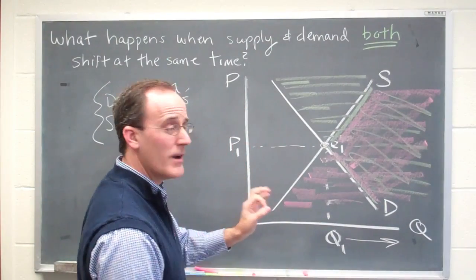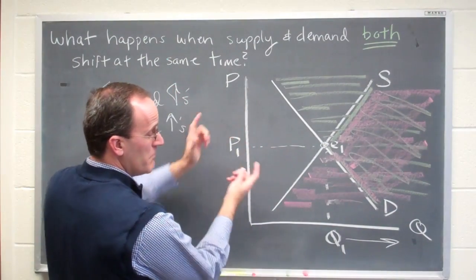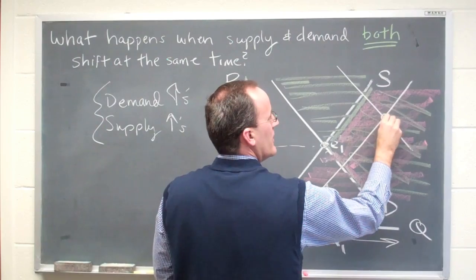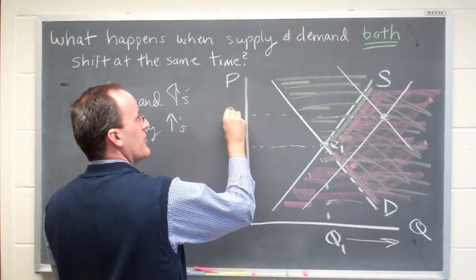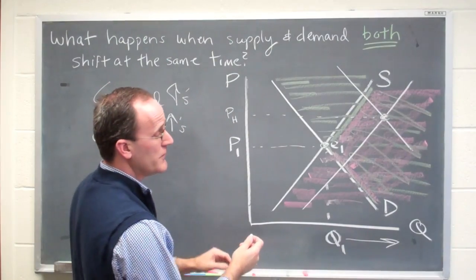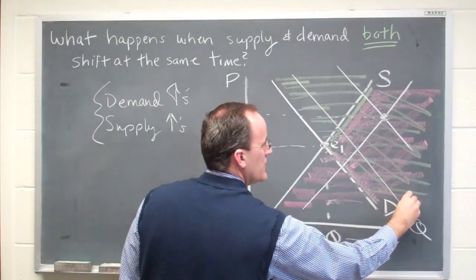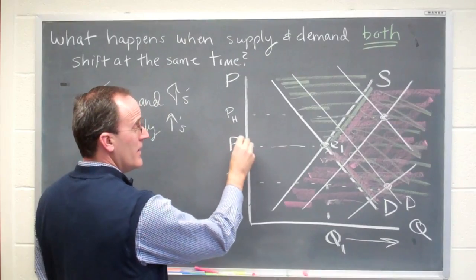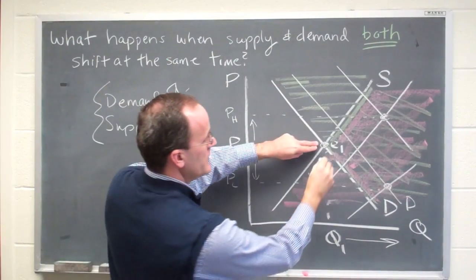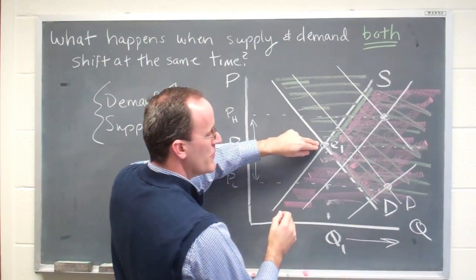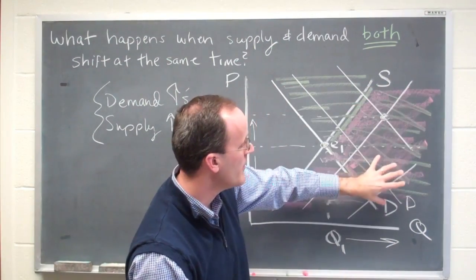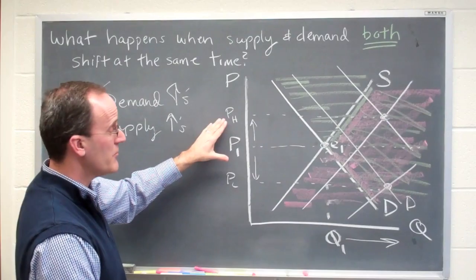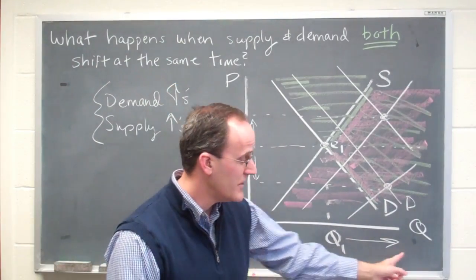What's not clear is what happens to the price. The price starts at P1, but if demand were to shift out a lot and supply were only to shift out a small amount, we might end up here and the price would be higher. Of course, it's also possible that the demand shift could be relatively small and the supply shift relatively large, in which case the price would be lower. So the price can rise or fall. Many of the new equilibriums are above the original equilibrium price, and many would be below. We have uncertainty with respect to price, but certainty with respect to quantity.